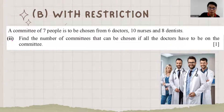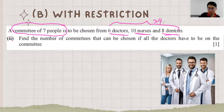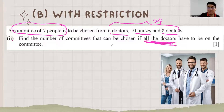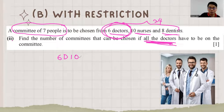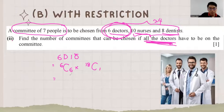Next restriction: form a committee of 7 from 6 doctors, 10 nurses, and 8 families (24 total). All 6 doctors must be on the committee. That means 6 doctors are fixed, and we need 1 more person from the remaining 18 people, so it's 6C6 × 18C1. The total number of ways to form the committee is 18.